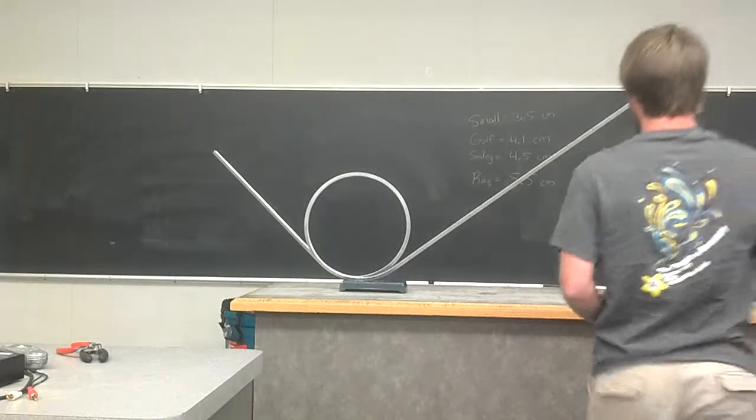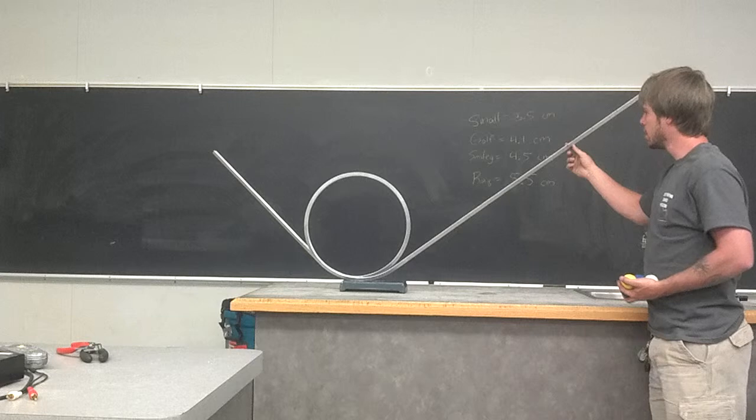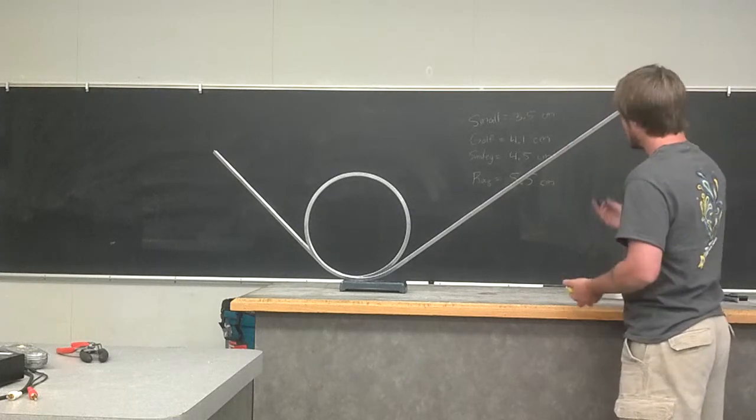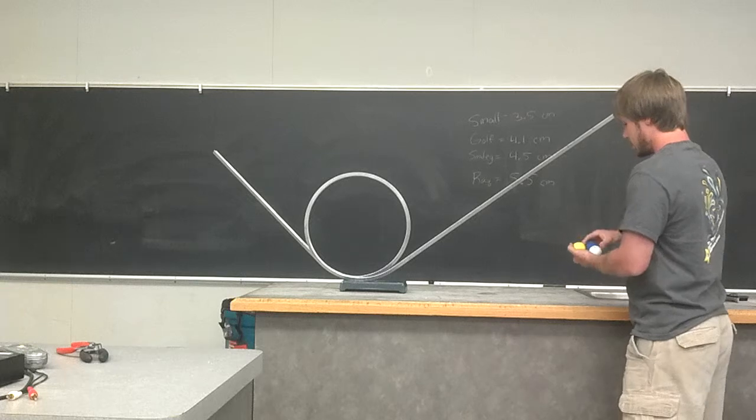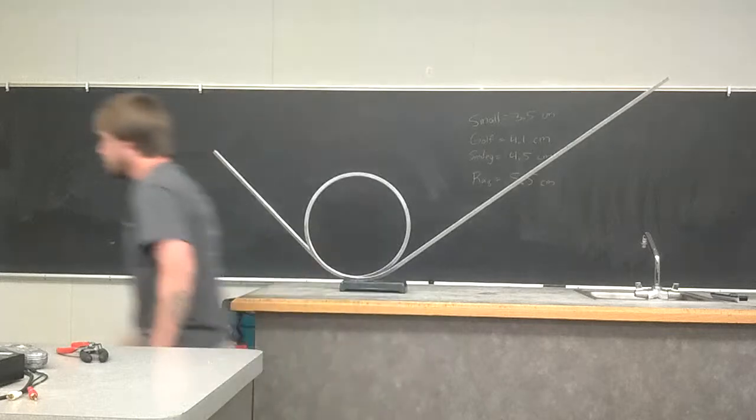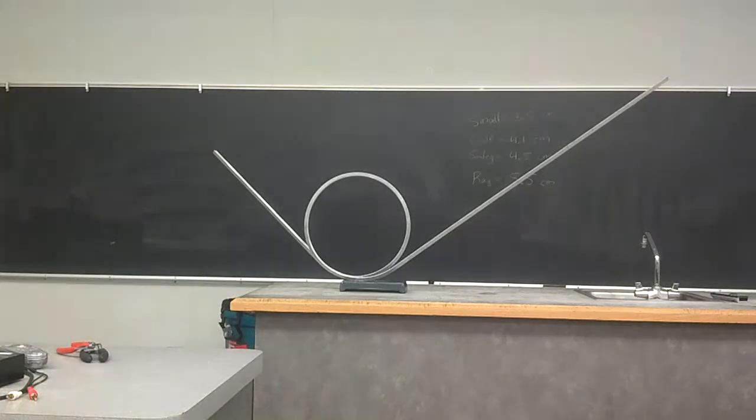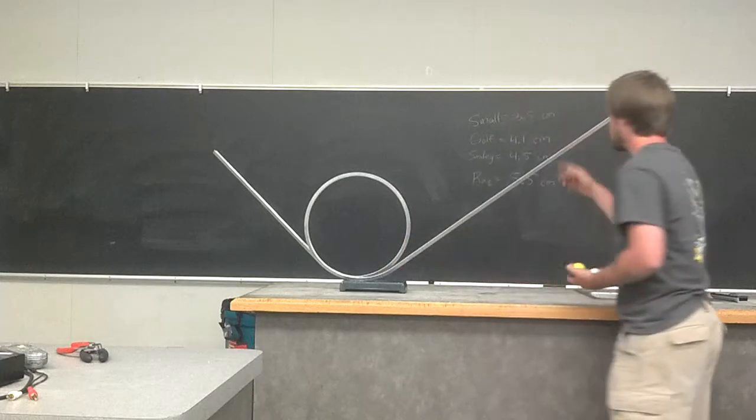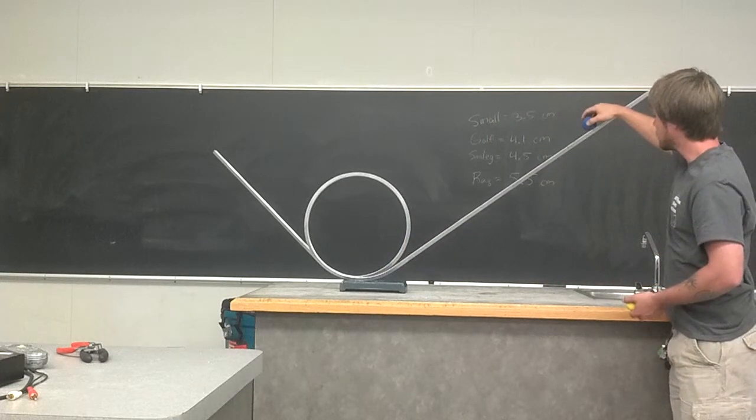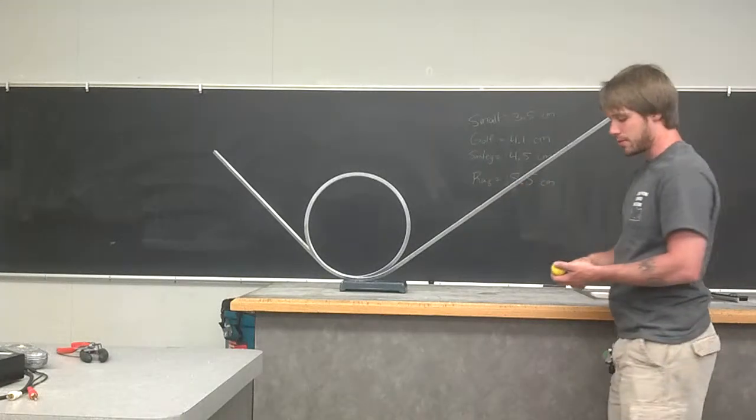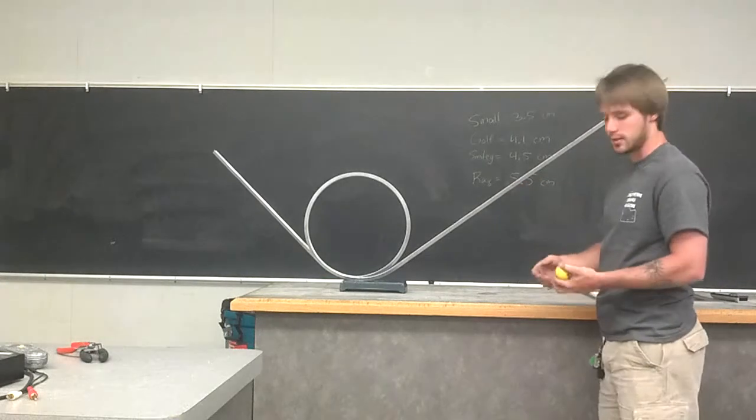We're going to start all of them on this mark, one-third of the way up from the top of the loop. First we'll start with the racquet ball. The racquet ball did not make it on the first mark. Try it on the second mark. And the racquet ball made it all the way through the loop on the second mark without slipping.